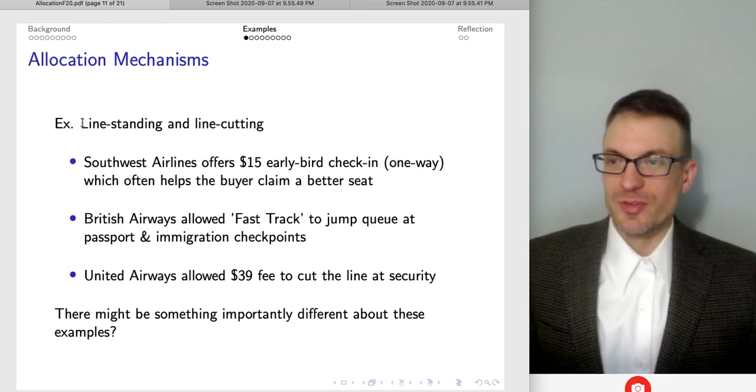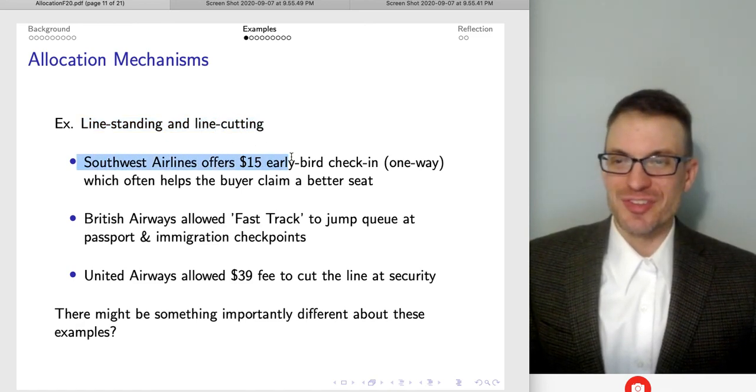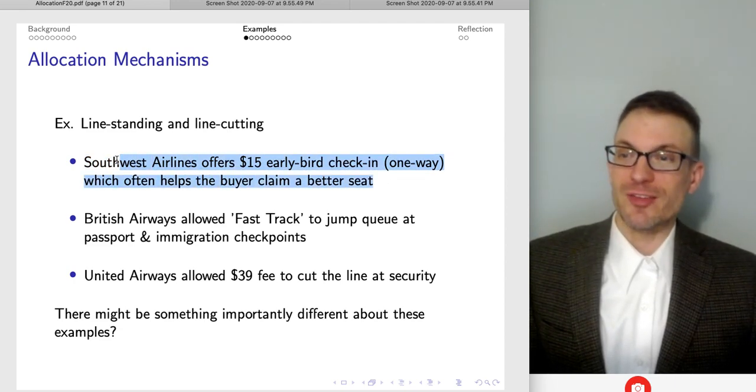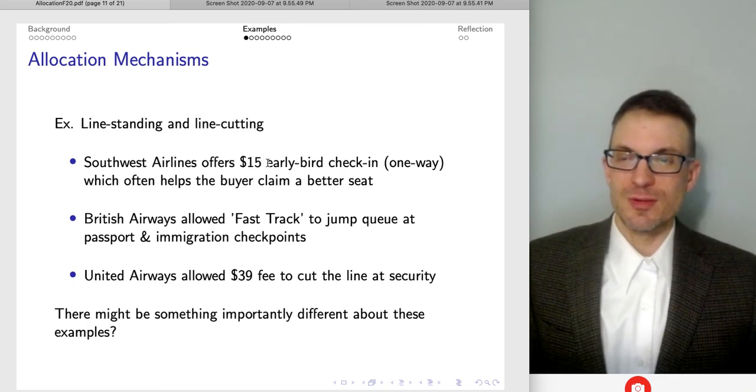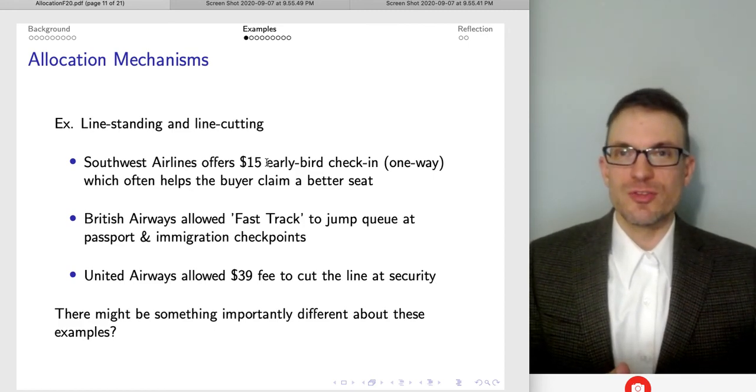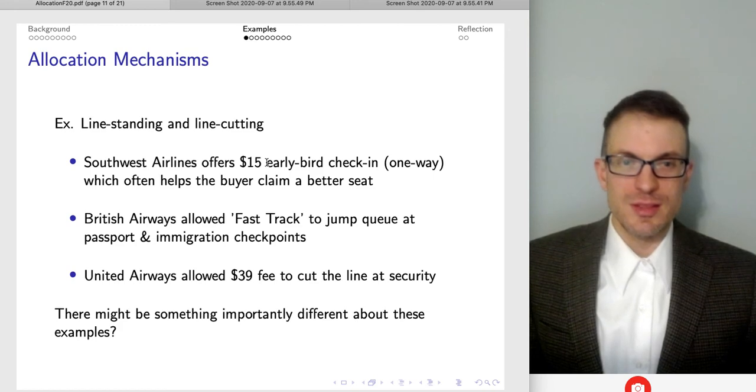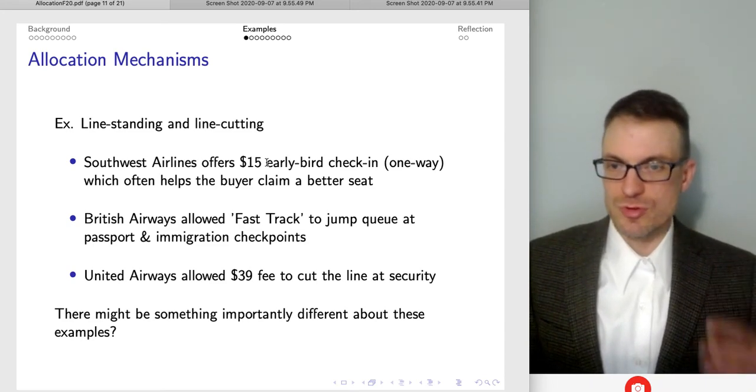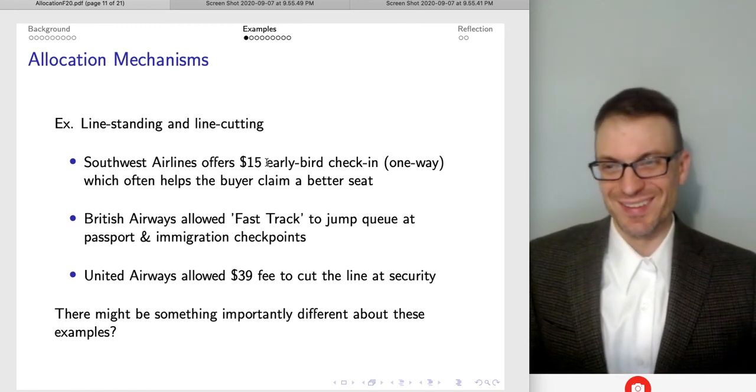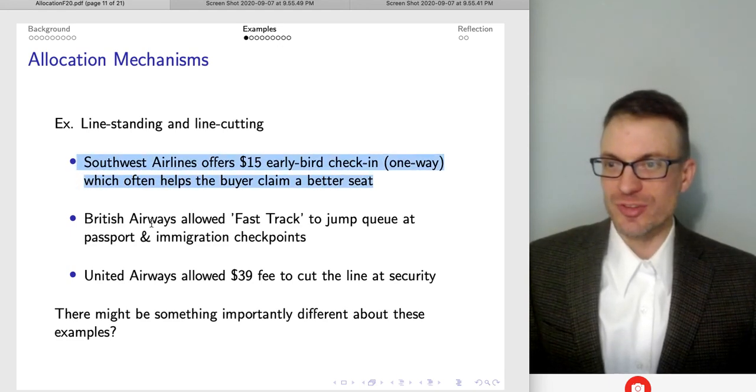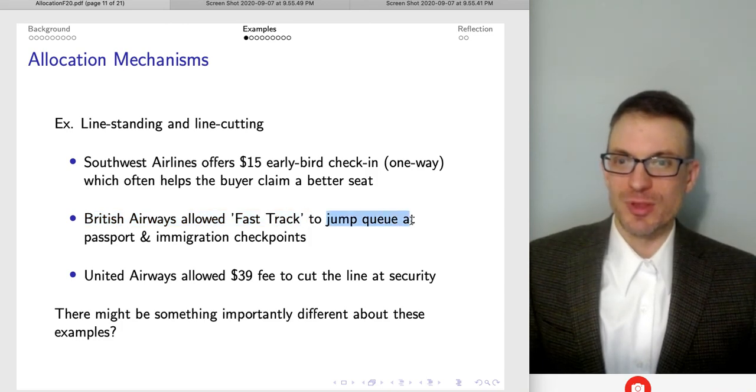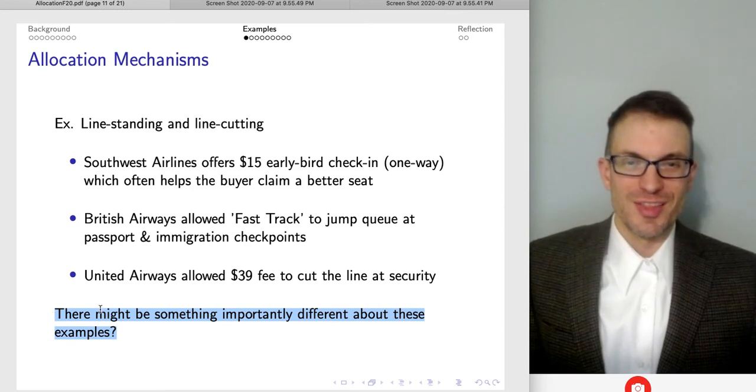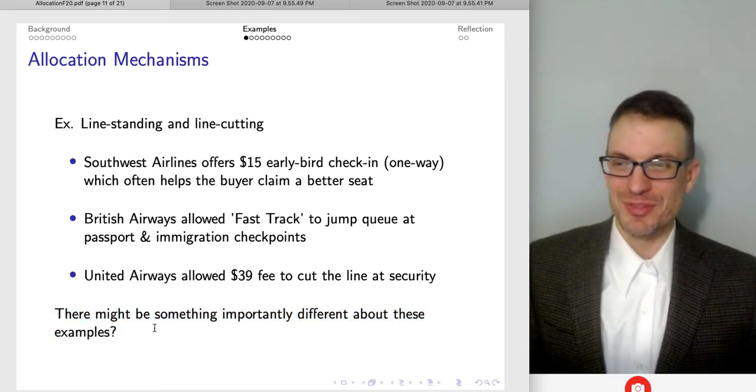So here's an example. So we can think of line standing and line cutting. So Southwest Airlines offers a fifteen dollar early bird check-in. So for one way, pay fifteen dollars for the way back, which often helps the buyer claim a better seat. Matter of fact, I do this. I like to get my early bird check-in because there is one seat by the exit row that has nobody in front of it. So you get quite a bit of leg room and I really actually kind of need that seat because I typically will do a long run before I fly, because if I'm traveling, might not be able to run very far. And so I do a long run the day of or the day before so my legs are usually sore. So I want quite a lot of leg room. So you can buy, maybe lay claim to a better seat.